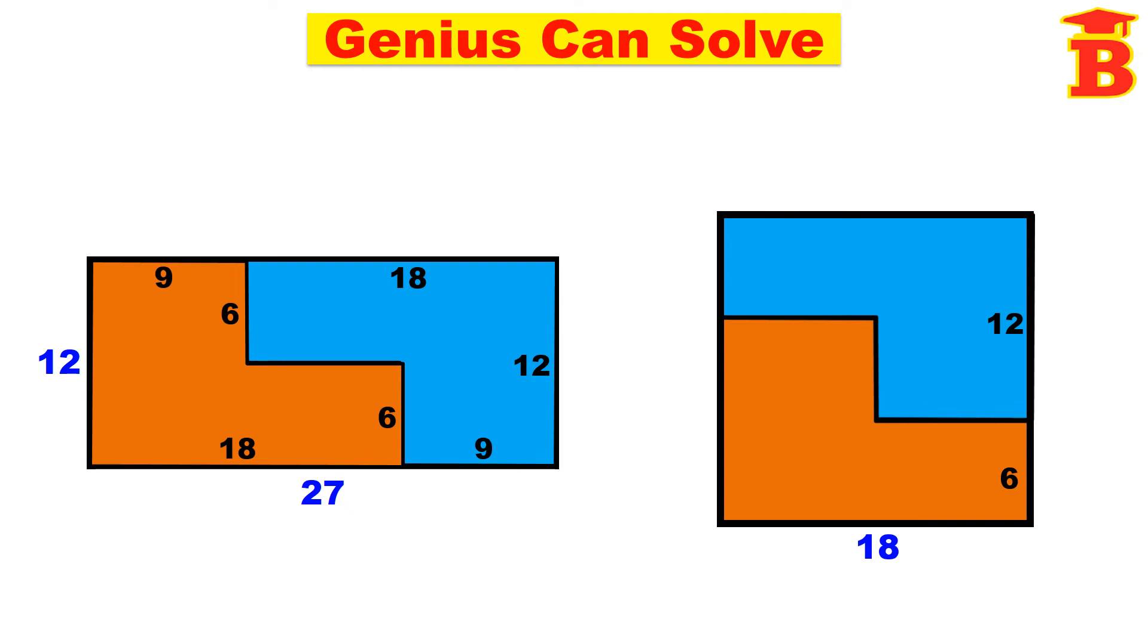The mathematical idea is that first we have to see the area of the rectangle. That is length into breadth. 27 into 12 is 324. So the area of the rectangle is 324 units.